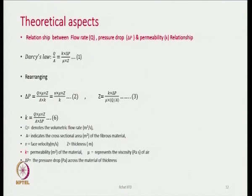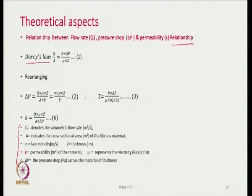We should be aware of some theoretical aspects while designing filter fabrics — the relationship between flow rate, pressure drop, and permeability. This is the standard Darcy's law equation: Q by A equals K times delta P divided by mu times Z, where Q, A, and other parameters are defined. If we rearrange, delta P equals Q by A times mu times Z divided by A times K. Since Q by A is V — the phase velocity — we can also write thickness in terms of other parameters.